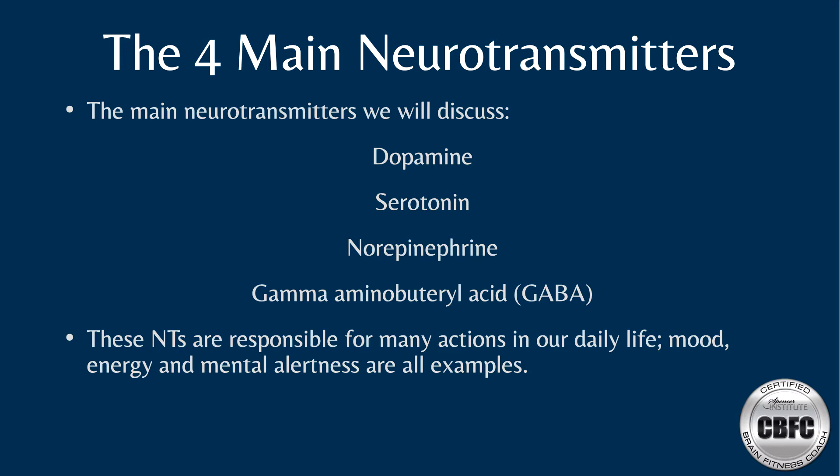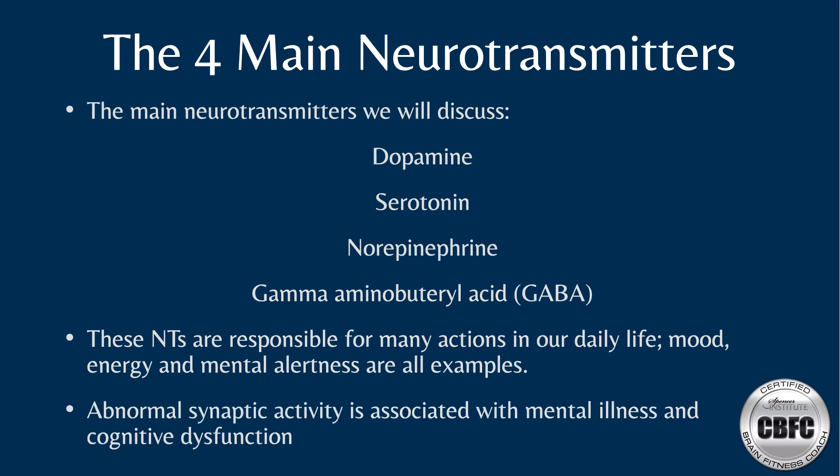Most mental illnesses or cognitive dysfunctions involve abnormal synaptic activity of one or more of these neurotransmitters. The human brain is essentially a chemical factory producing serotonin, dopamine, and other vital neurotransmitters. It becomes really important to consume raw nutrients at appropriate concentrations to generate these chemicals. Combinations of amino acids, vitamins, minerals, and other biochemicals from foods must be in appropriate balance to synthesize the neurotransmitters we rely on for homeostasis.